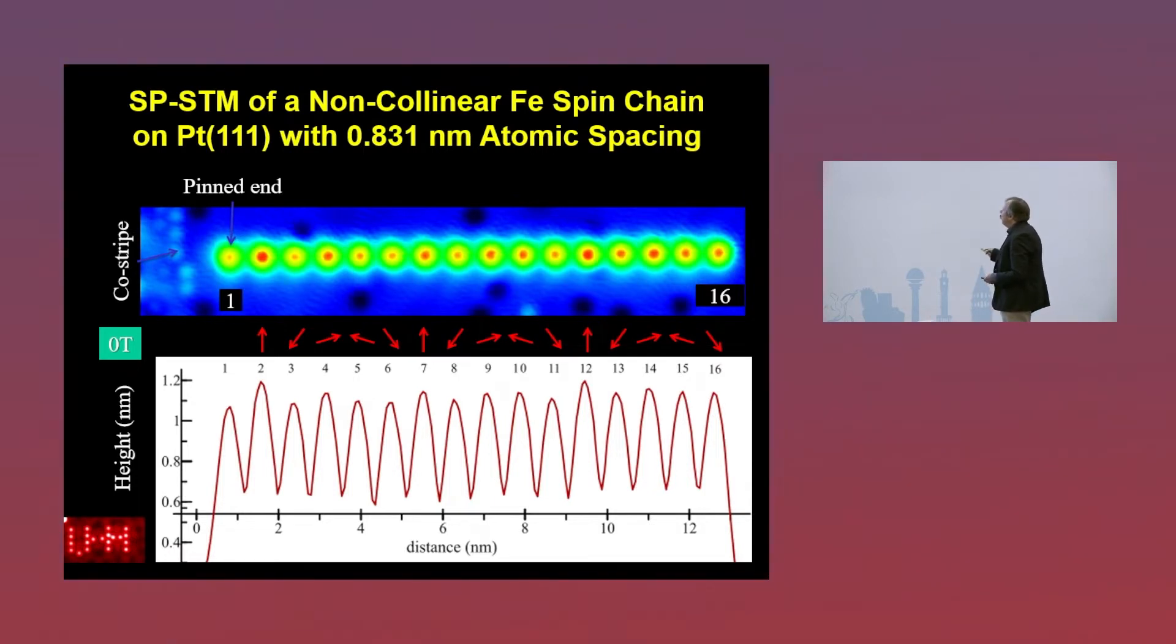So this is the spin polarized map of that chain of iron atoms. And you see here that there is a drastic change in intensity of measured spin related signal. It's in fact the spin resolved tunneling conductance which we measure between the STM tip and this donor structure. And you see that here the intensity is low, then it gets very bright, then low, then bright.